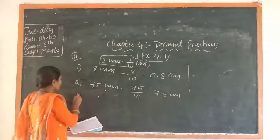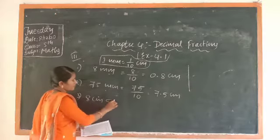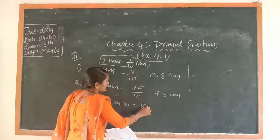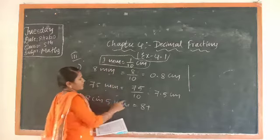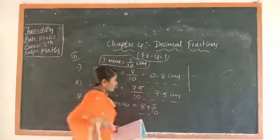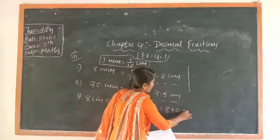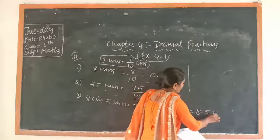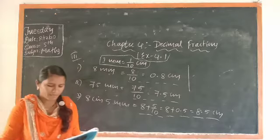Next, in the third question, they give 8 centimeter and 5 millimeter. You only convert the millimeter, not the centimeter. So write 8 plus 5 millimeter. 1 millimeter is 1/10, so 5 millimeter is 5/10. The value is 8 + 5/10, which is 8 + 0.5 = 8.5 centimeter. Fill in the blanks.